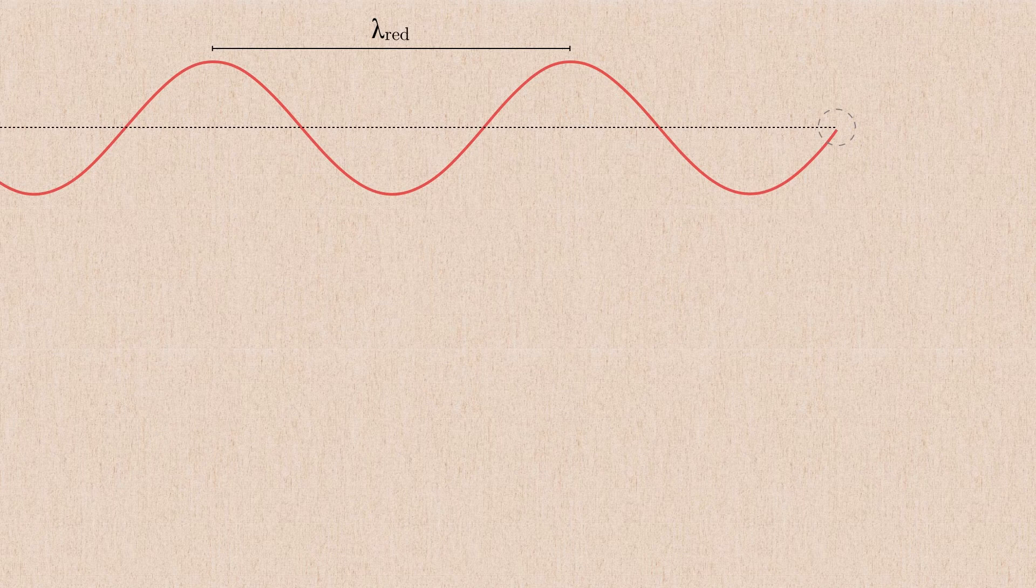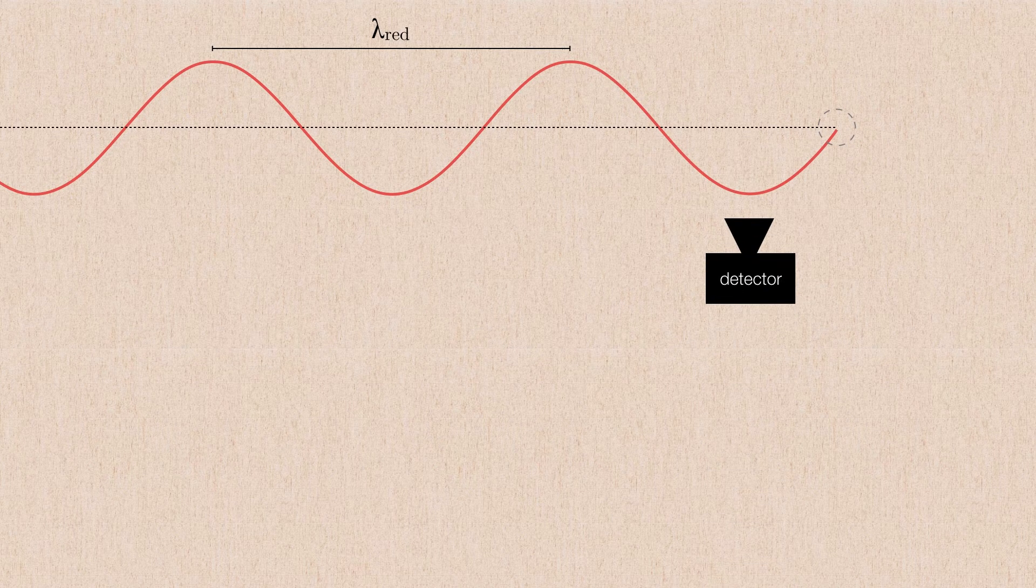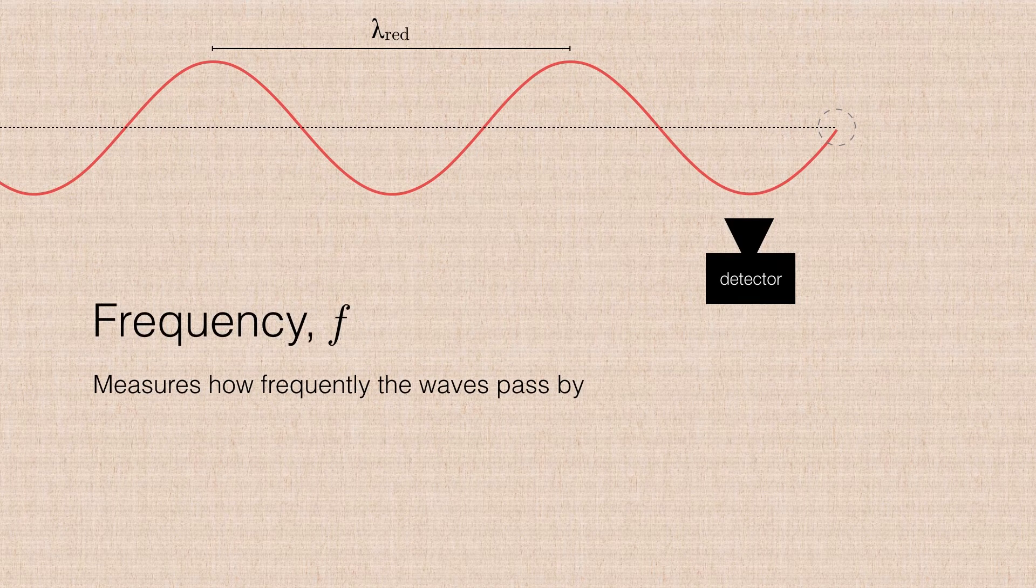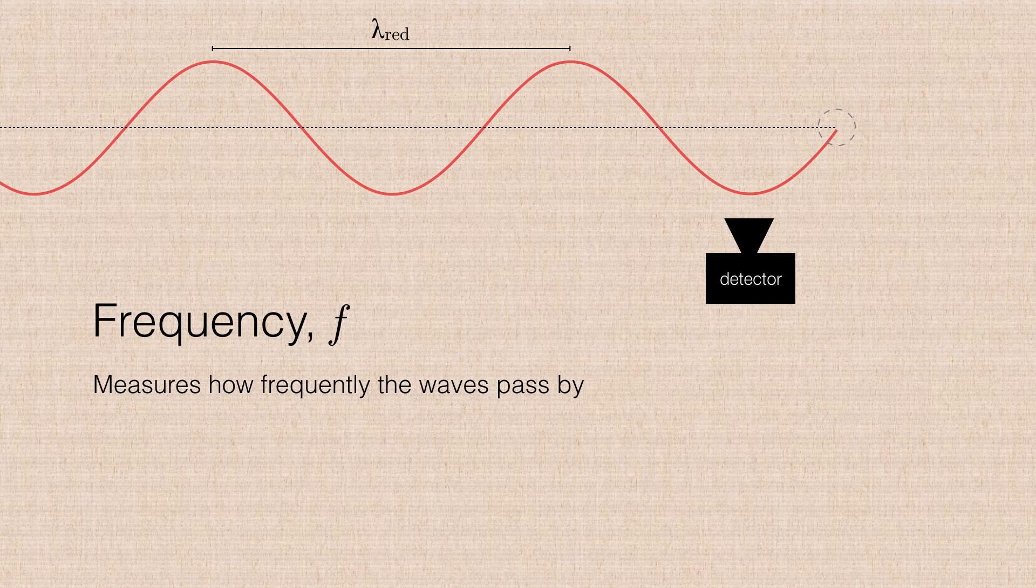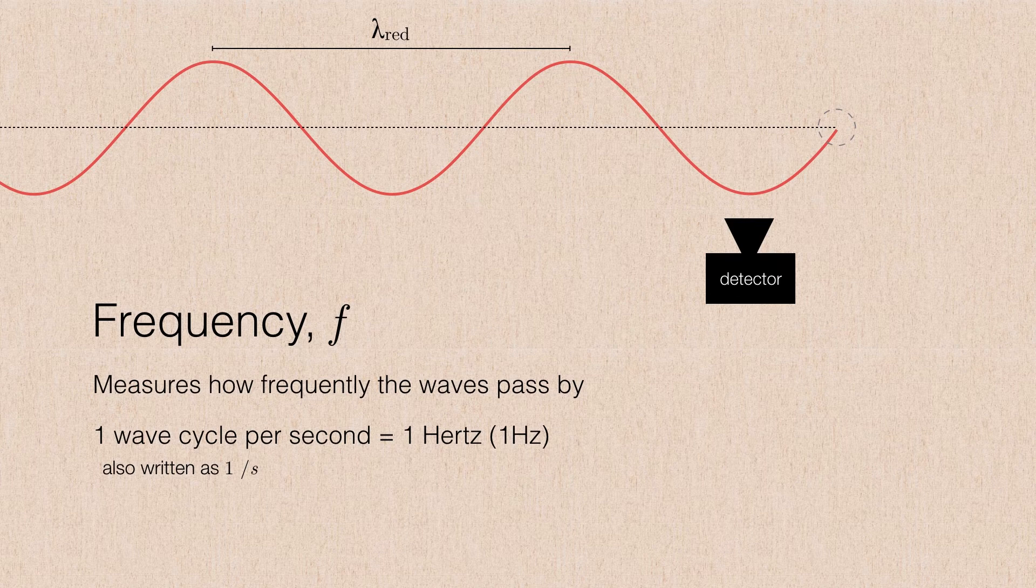So let's think a little bit about a photon of red light just coming along through space. If we take a detector and we try to count the number of waves that pass by every second, we get something called the frequency. It's signified by the lowercase letter f and it's just a measurement of how many waves pass by per second. So for example, if we had just one wave cycle going by per second, we would call that one hertz, named after the gentleman who discovered this. Another way of expressing hertz is one over second.